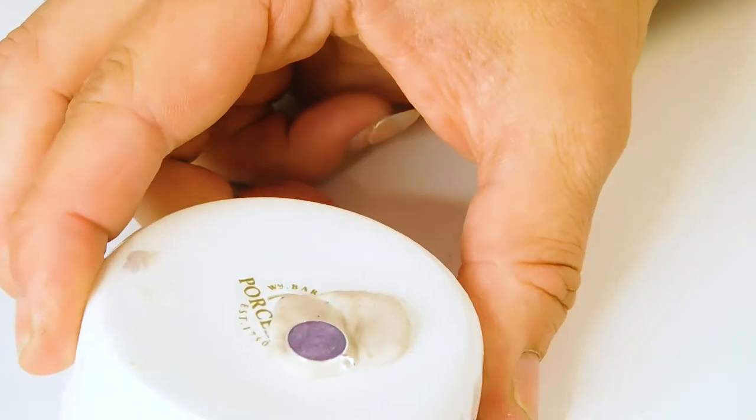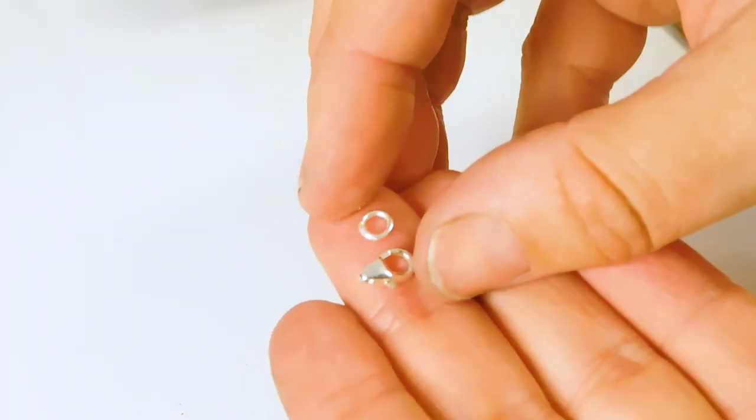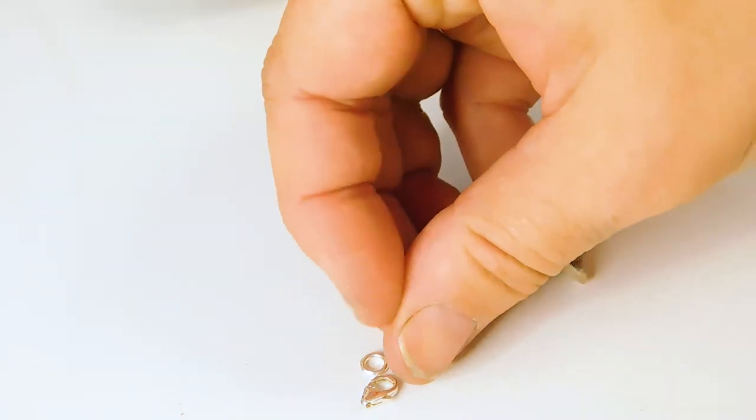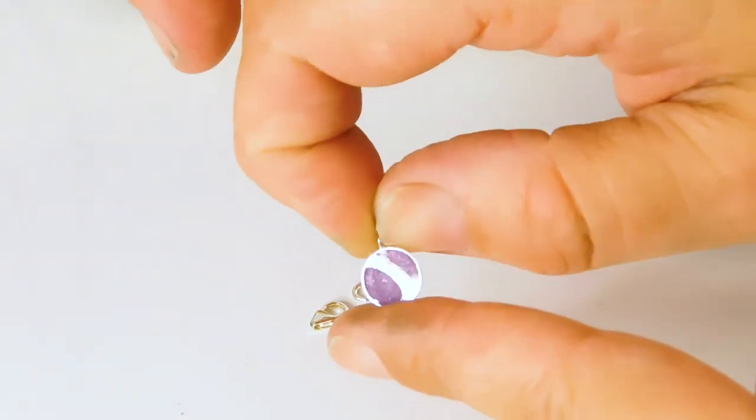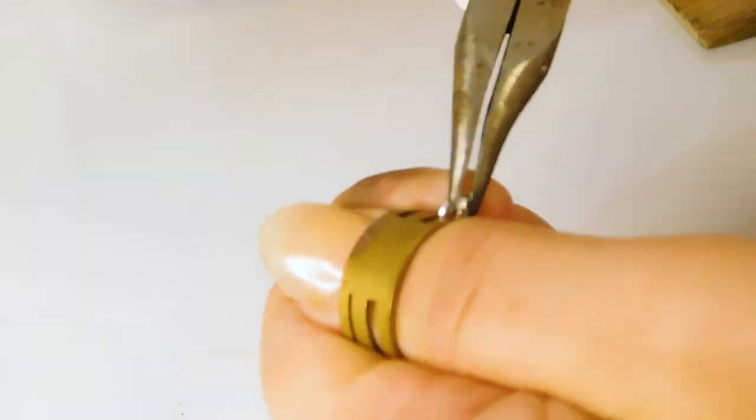Adding a lobster clasp. Use a jump ring opener and add the findings to your jewelry. In this case, I'm adding a lobster clasp so my client can wear it on a large link bracelet or necklace, or remove it to wear it on the chain.